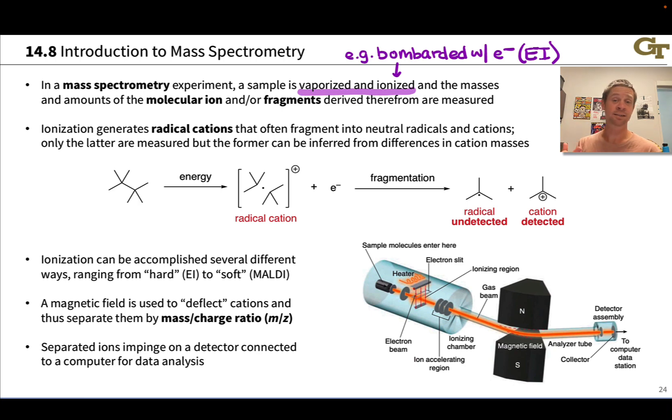After ionization, chemistry occurs. We get the molecular ion, the radical cation derived from loss of one electron from the molecule, but we also get fragments derived from that molecular ion falling apart into smaller cationic pieces.